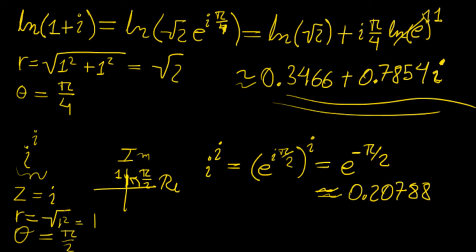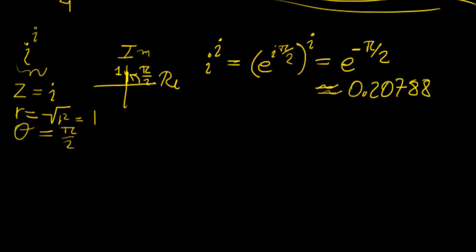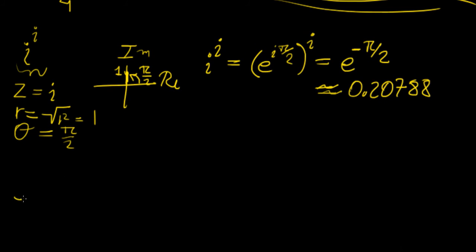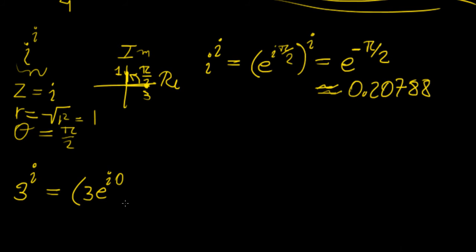This trick only works for expressions like i^i. Let's say we have 3^i, where now we have a real number as the base. Can we use the same technique? Well, the magnitude is 3 and the angle is zero, since 3 lies on the real axis. So we end up back at the same expression — that's not very useful. So this approach only works for that one case.